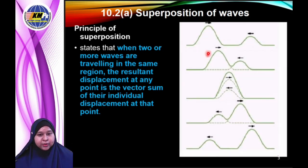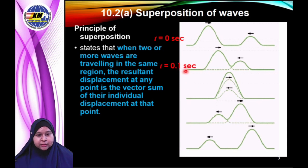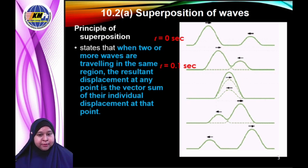Look at this diagram. There are two waves — the first wave moves to the right and the other wave moves to the left. At 0 seconds this is the condition of the two waves. At 0.1 seconds the two waves move and get closer; they have not met each other and no superposition has occurred yet. The amplitude of the first wave is 2 cm.